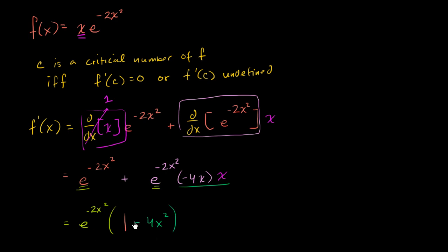So this is the derivative of f. Now, where would this be undefined or equal to zero? e to the negative 2x squared is defined for any value of x, and one minus 4x squared is also defined for any value of x, so there are no points where the derivative is undefined. As for equal to zero: e to the negative 2x squared can never be equal to zero.